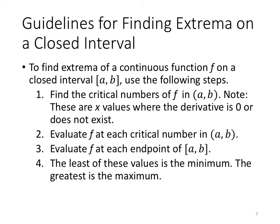Here are some guidelines to find extrema of a continuous function f on a closed interval [a, b]. Step one: find the critical numbers of f in the open interval (a, b) — these are x values where the derivative is zero or does not exist. Step two: evaluate f at each critical number found in step one. Step three, very important: evaluate f at each endpoint of the closed interval. The least of these values is the minimum; the greatest is the maximum. Don't overthink it.